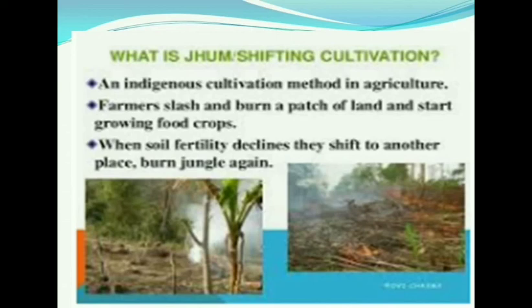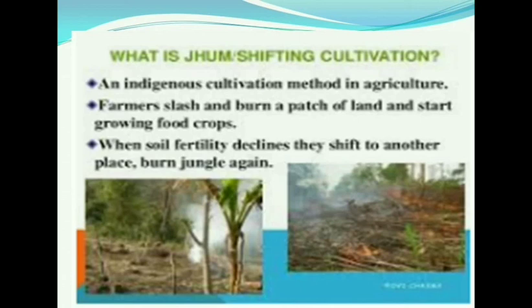In shifting cultivation, trees are cleared to clean the soil, the ash is mixed with the soil, and crops such as maize, potatoes, and cassava are produced. When the land is repeatedly used and becomes infertile — its fertility is reduced — the farmers shift to a new piece of land. They keep moving to new land when the existing land becomes infertile. This is shifting cultivation.